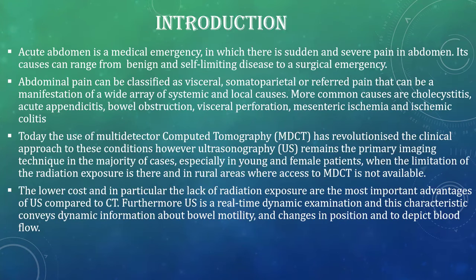Introduction: Acute abdomen is a medical emergency in which there is sudden and severe pain in abdomen. Its causes can range from benign and self-limiting disease to a surgical emergency. Abdominal pain can be classified as visceral, somatoparietal or referred pain that can be a manifestation of a wide array of systemic and local causes. More common causes are cholecystitis, acute appendicitis, bowel obstruction, visceral perforation, mesenteric ischemia and ischemic colitis.